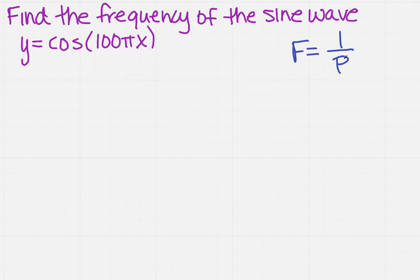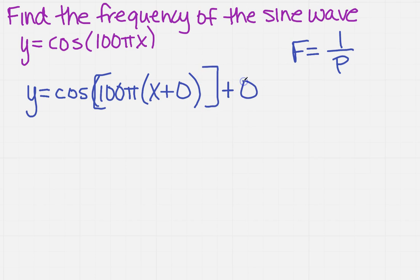To get the period, I need to know b, so I have to set this into standard form. This is going to be y equals cosine of—I need to get x by itself, so I'll factor out 100π and multiply that by x. Plus what? Well, I multiply by 0 for c, and then that whole thing is plus 0.